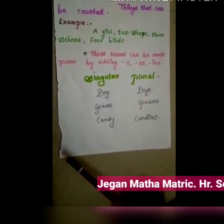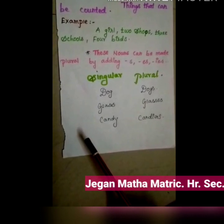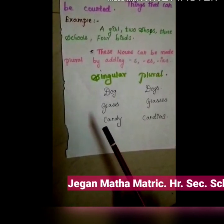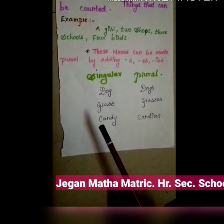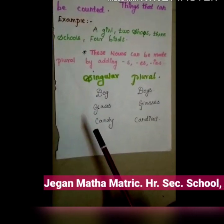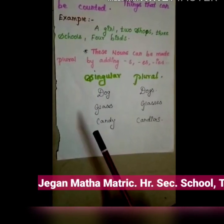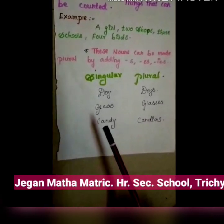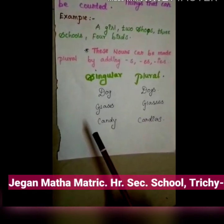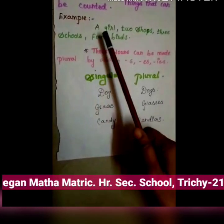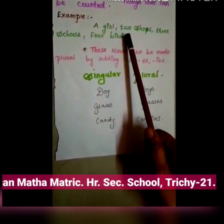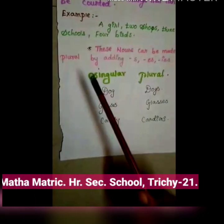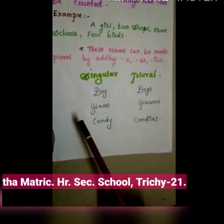Countable nouns — things that can be counted, we call countable nouns. Which we can count, we call countable nouns. For example: a girl, two shops, three schools, four birds — like that.